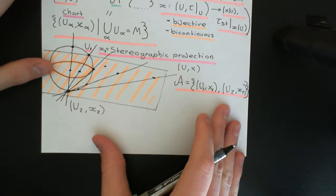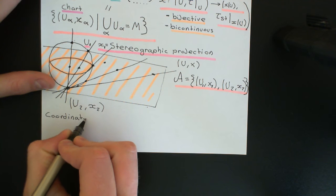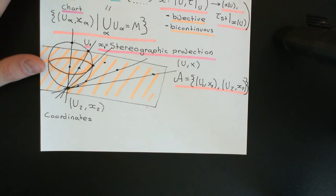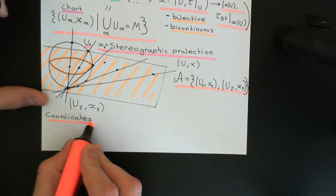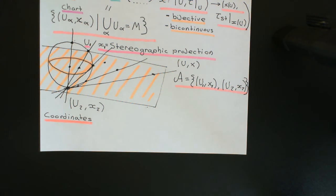The second piece of terminology I'd like to introduce is the concept of coordinates for a chart. A chart gives the points in a chart domain coordinates with respect to that chart. This is going to be extremely important, especially when you go on to differential geometry. Once you have coordinates for the points of a topological manifold, you can start to do more things — you can use algebra, the vector space structure of R^n. And if you've got maps between coordinate systems, you can potentially start to do calculus.